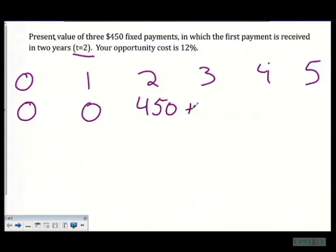And then we're going to add on to that the $450 coming in year three, and we're going to have $450 coming in year four. We have three payments of $450.